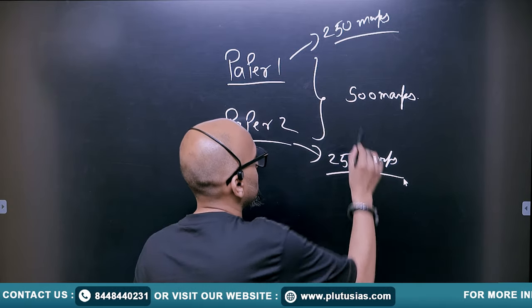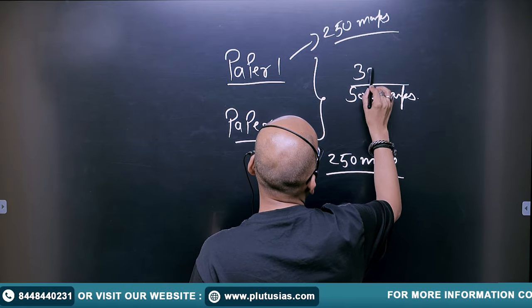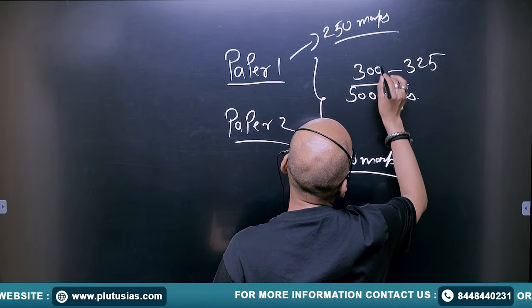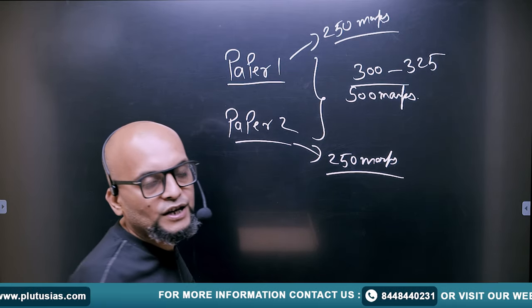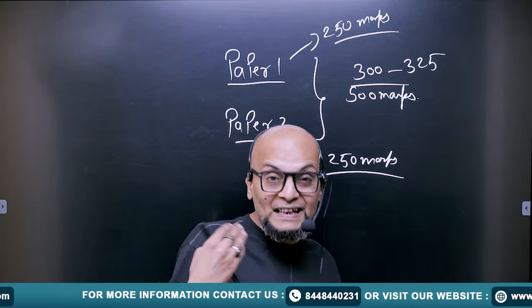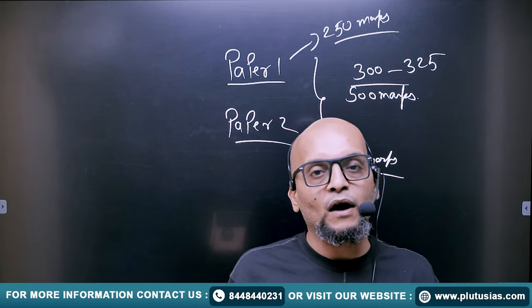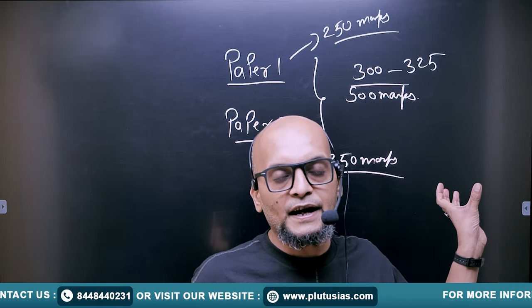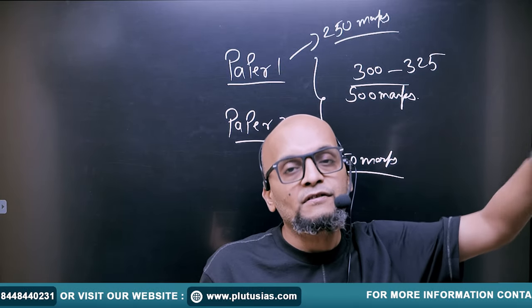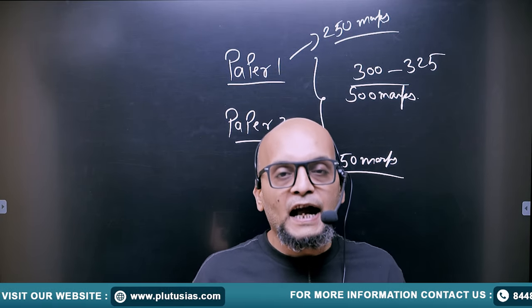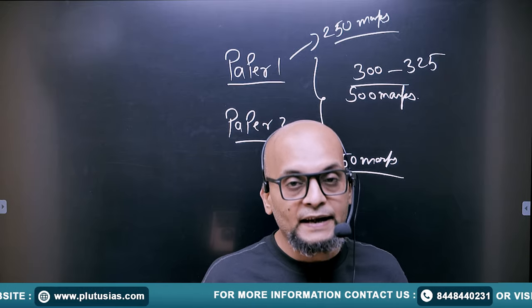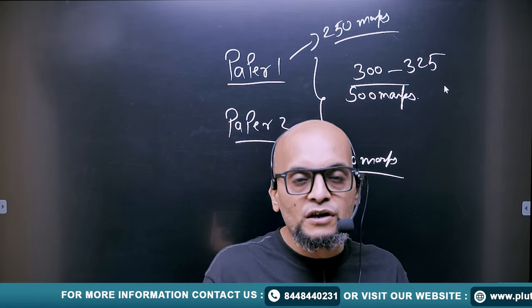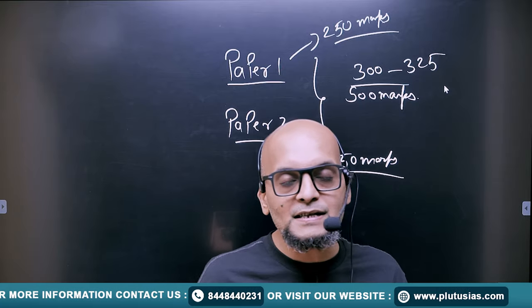Whereas in Physics, out of 500 marks with right methodology, you can easily get 300 to 325 marks. You can score even higher but that will require some extra amount of input from your side. But 300 to 325 is very much achievable and doable. Even a below average student, if he works hard here, he can get these many marks.